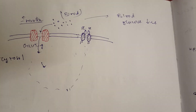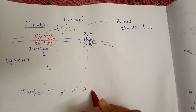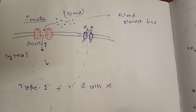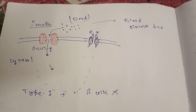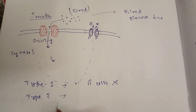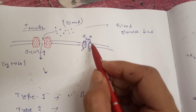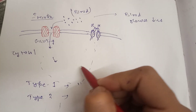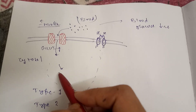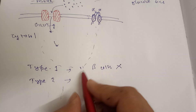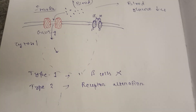In type 1 diabetes, the beta cells of the pancreas are not functioning effectively and are not producing insulin, so this entire mechanism does not work. In type 2 diabetes, which is non-insulin-dependent diabetes, insulin cannot bind to the receptor because there is an alteration within the receptor itself. The receptor cannot detect insulin, the signaling cascade does not proceed, GLUT4 is not recruited, and blood glucose levels remain high because glucose cannot enter the cell.